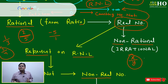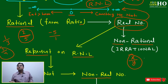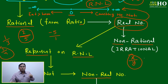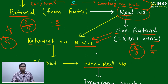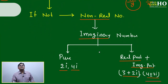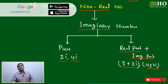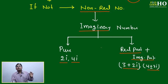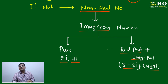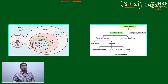The definition we memorized since childhood: a rational number is a number which can be represented in the form of p by q, where p and q are integers. Irrational number: a number which cannot be represented in the form of p by q where p and q are integers. We have memorized all the definitions but never relook at what these definitions are actually telling. Non-rational numbers cannot be represented as a ratio, but they are still real numbers. So real number divides into rational and irrational.